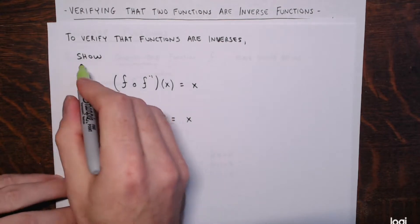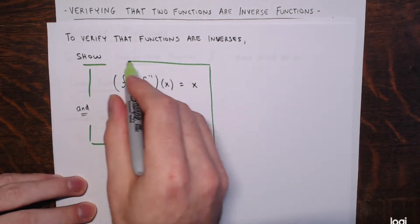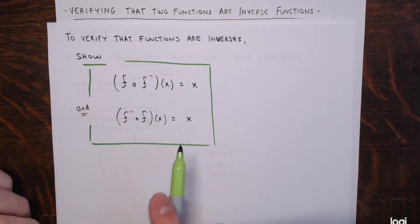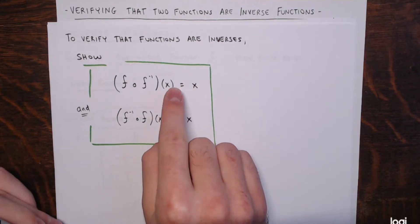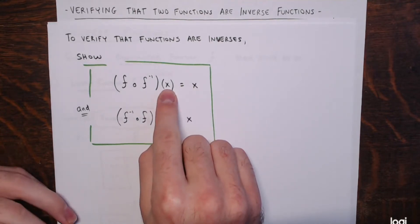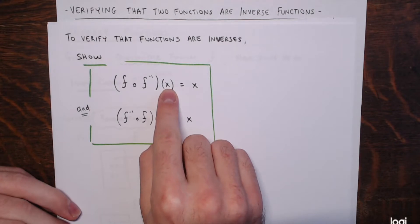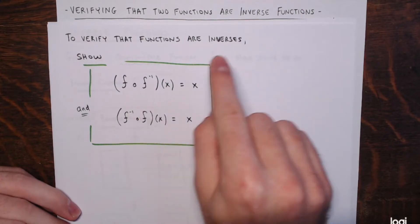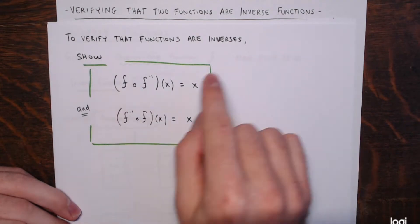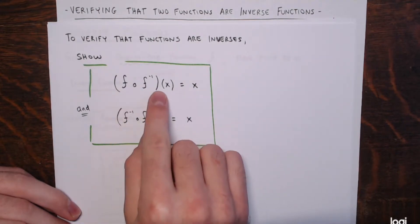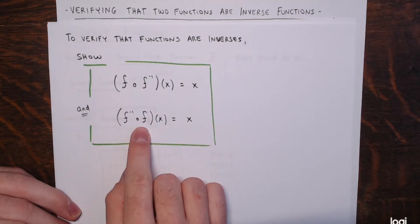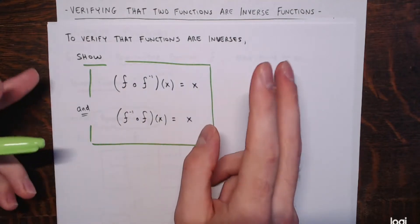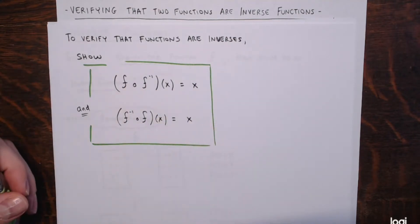This is one of those scenarios where the order in which you compose doesn't matter. Normally when you compose two functions, switching the order changes the expression entirely. But when those two functions are inverses, it doesn't matter what order they come in — you'll end up with just x as your final expression.